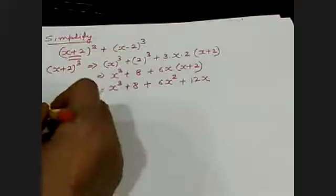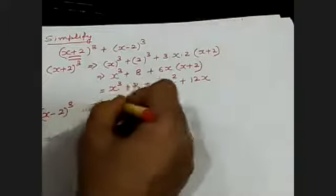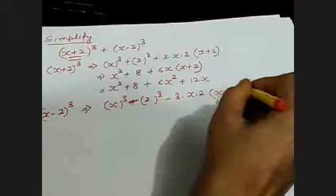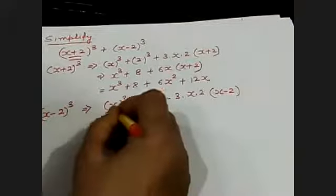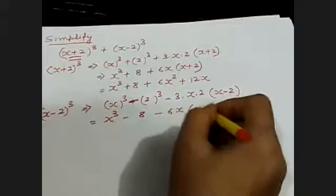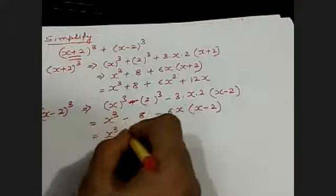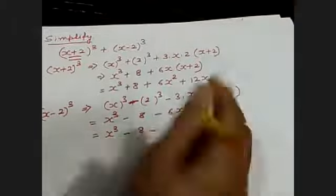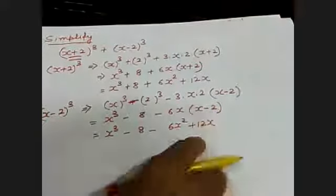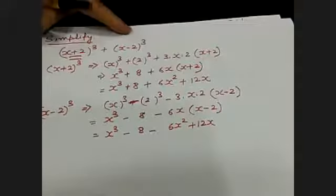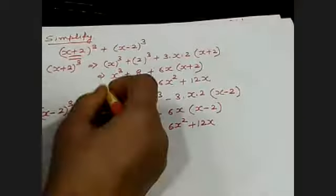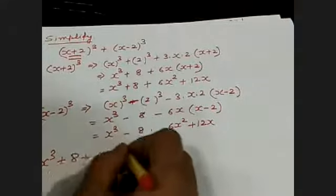Now I will solve x minus 2 whole cube. That is equal to A cube minus B cube minus 3 into A into B, in the bracket A minus B. So it is equal to x cube minus 8 minus 6x in the bracket x minus 2. When you expand: x cube minus 8 minus 6x squared plus 12x.